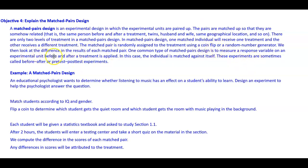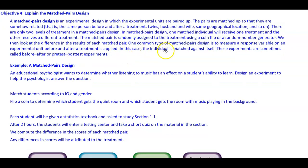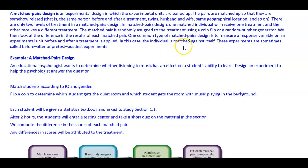We then look at the difference in the results of each matched pair. One common type of matched pairs design is to measure a response variable on an experimental unit before and after a treatment is applied — in this case, the individual is matched against themselves. These experiments are sometimes called before-and-after or pre-test and post-test experiments.